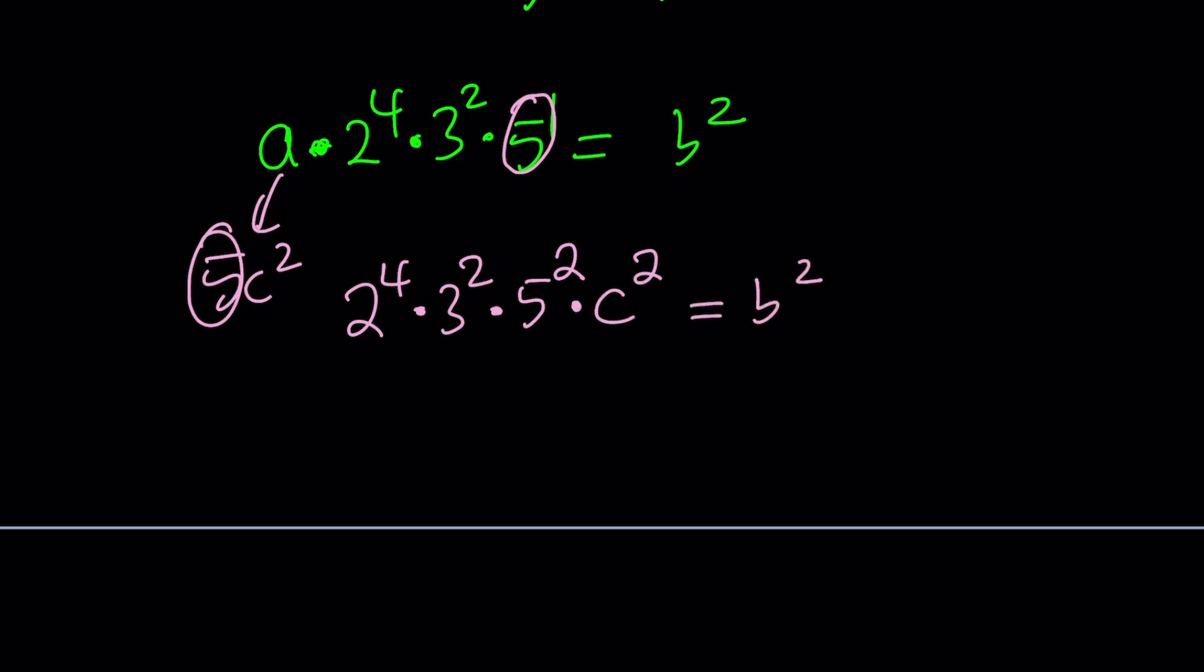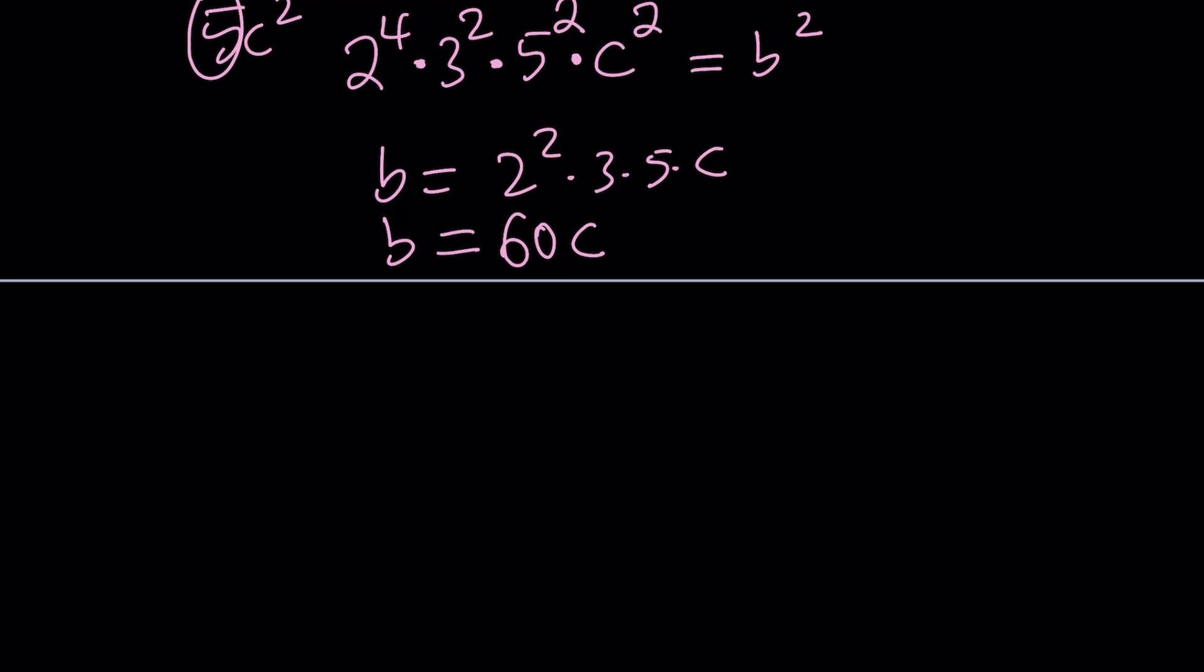So if you square root everything, b is going to be 2 squared times 3 times 5 times C, or b is going to be 12 times 5, which is 60C. You see what I'm talking about? I hope you do. So the result is a equals 5C squared and b equals 60C. And C is an integer, positive integer, and you can include zero if you want. But those are going to be all the values, which means there are infinitely many solutions.